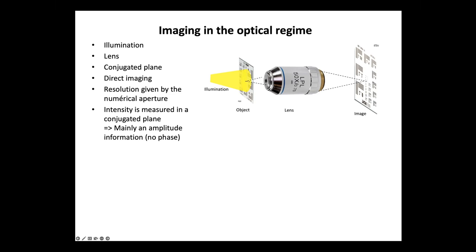We know in textbooks that we have a resolution which is related to the numerical aperture. And what is important to understand is that in this conjugated plane, we have an intensity — a field of light which is actually a magnified field, similar to what we have in the plane of the object. But since we are only measuring the intensity, we lose the phase information.